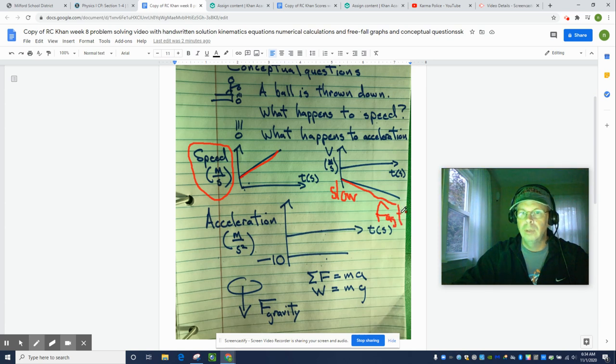Khan and I have sort of a disagreement about this. Khan says this is a decreasing pattern. I say no. Negative 10 meters per second is faster than negative 5 meters per second.